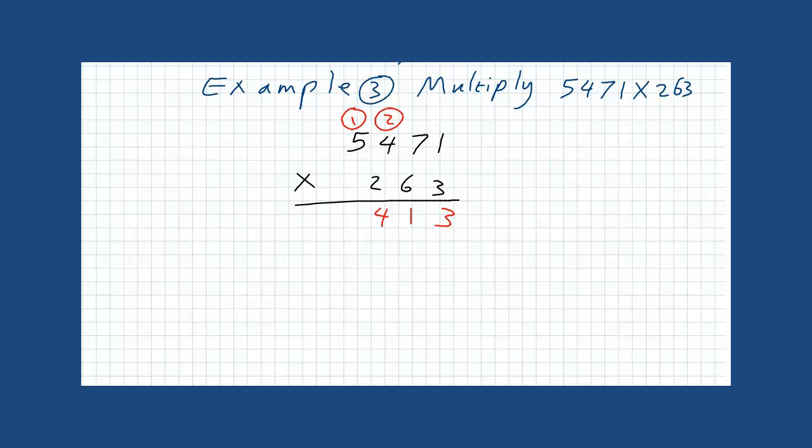3 times 5 is 15. Plus 1 is 16. Now, we will start multiplying the tens. First, we will put a 0 here.